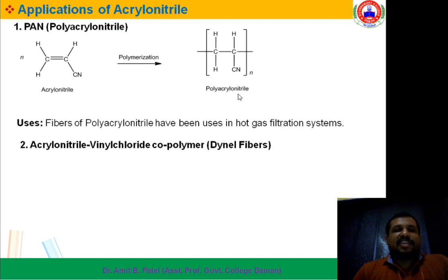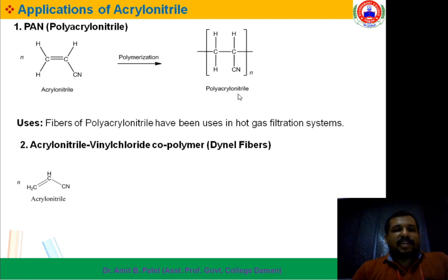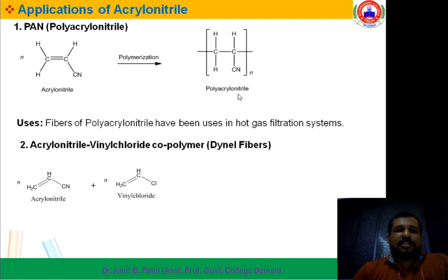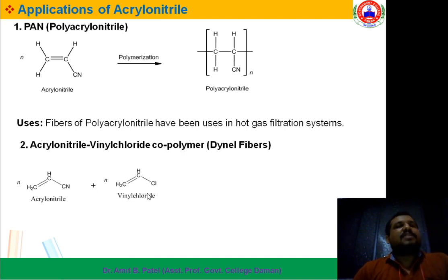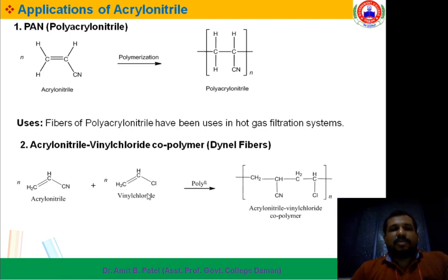Dynal fibers are also known as Acrylonitrile-Vinylchloride Copolymer. N moles of Acrylonitrile react with N moles of Vinylchloride. If you see the structures of Acrylonitrile and Vinylchloride, the difference is between Cl and CN. Polymerization takes place to form this copolymer. The double bond shifts between the two carbons.